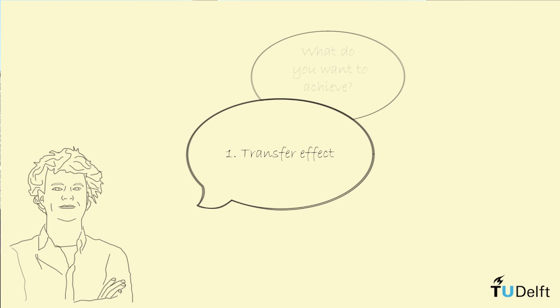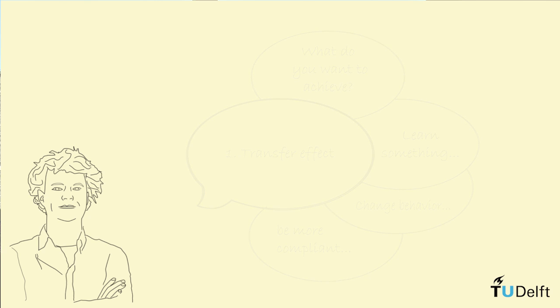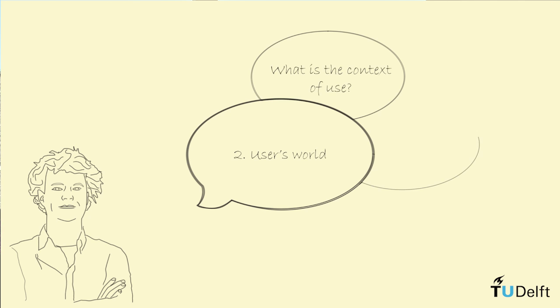What is exactly that you want to achieve with your game? Is it that you want people to learn something, to change their behavior, to stay more compliant to their therapy, to swallow their medicine more regularly? That's the transfer effect and that's often forgotten. You have to talk with all your stakeholders about specifying what is the transfer effect for your user. What are you designed for? What is your design goal?